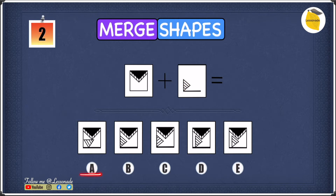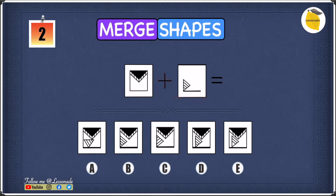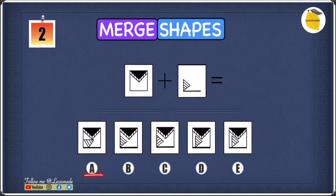Let's have a look at option A. If we find either one of these shapes different when we have merged them, then we cross it off. We need the shapes to stay the same. The shapes can be rotated but they cannot be reflected, nor can any of the features inside the shape be changed.